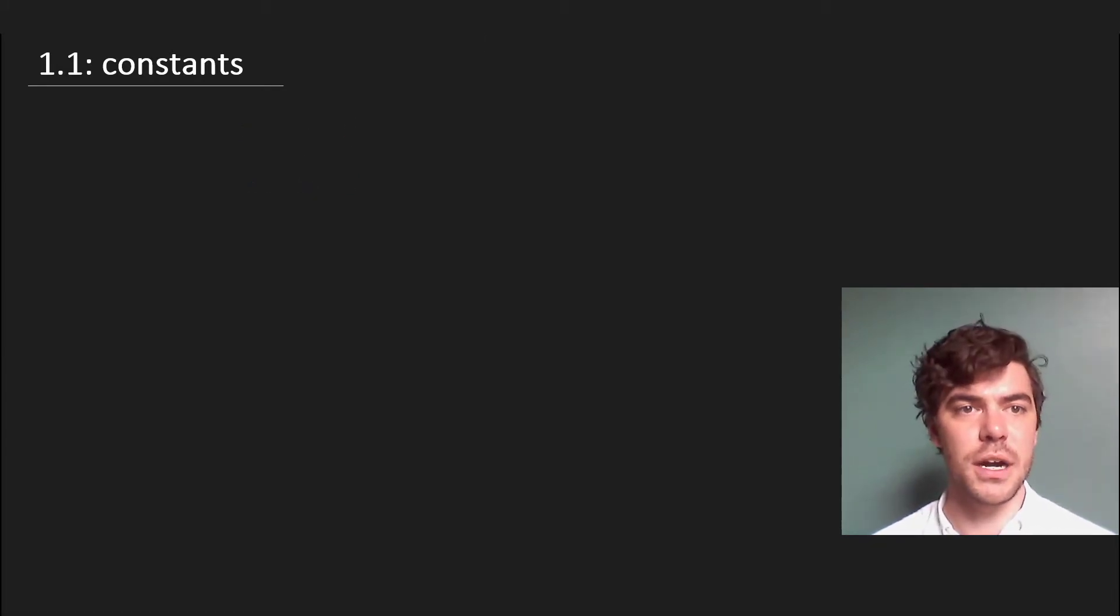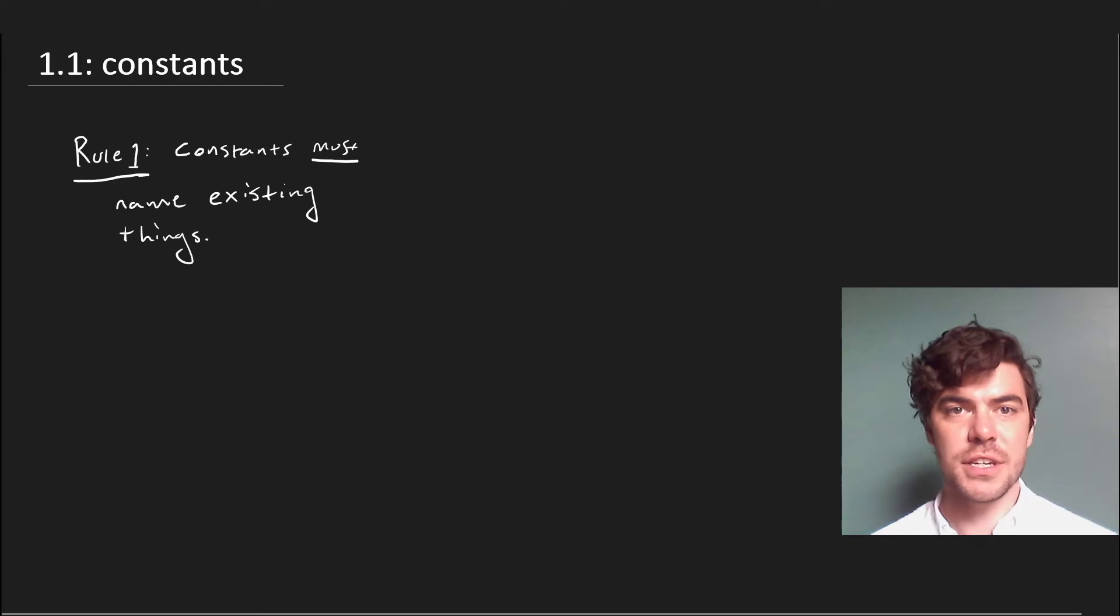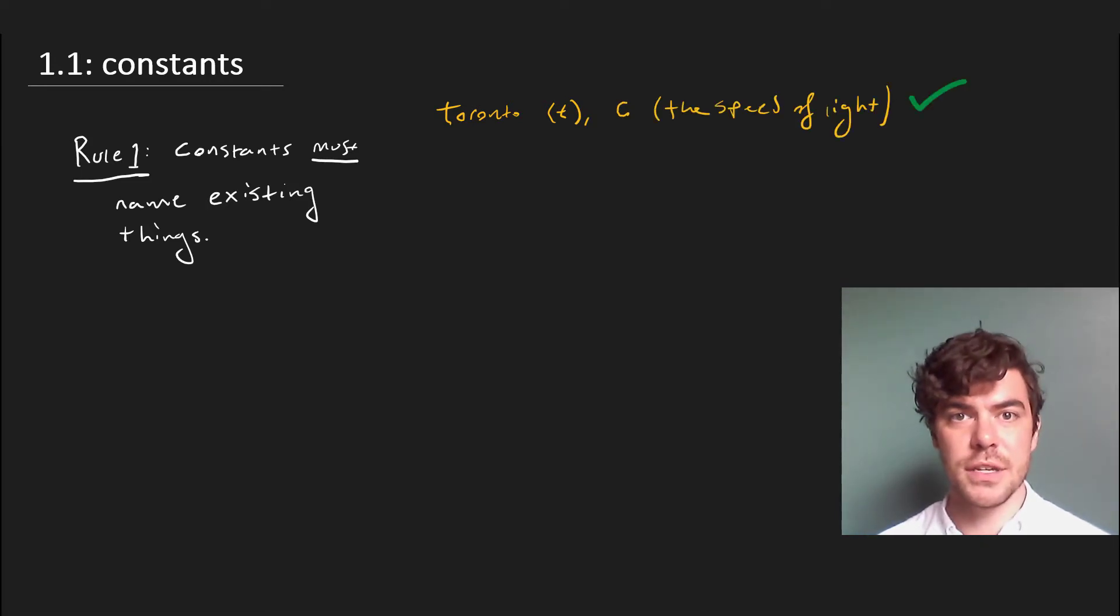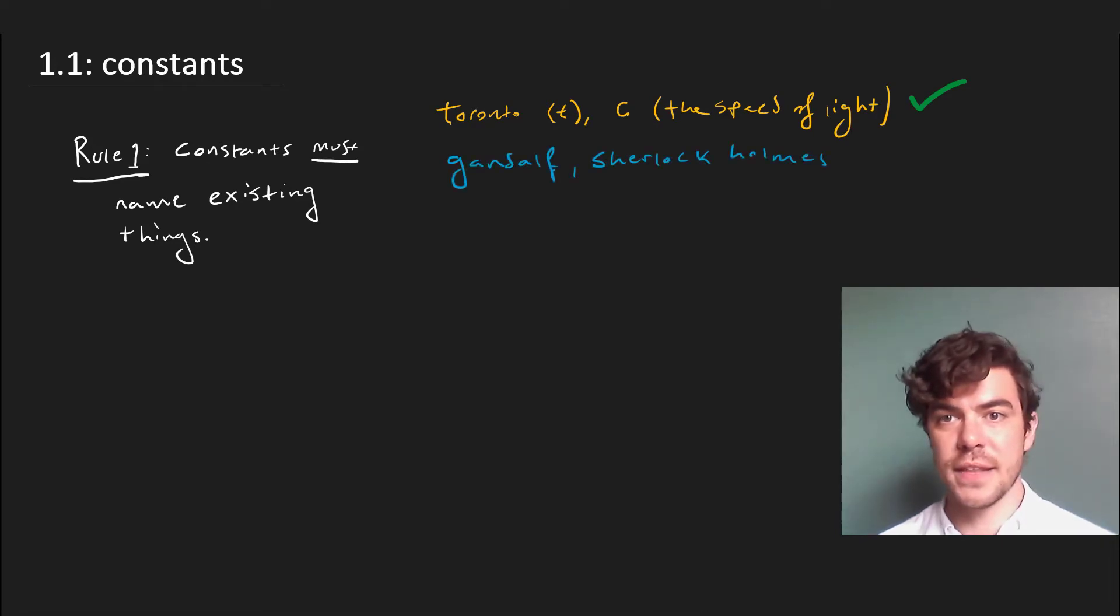Now there are three rules for constants that we're going to go over here. The first rule is that constants must name existing things. So it's perfectly fine to have a constant like Toronto, which we could write as T, or just to pluck an example from physics, a constant like C which names the speed of light, but it's not okay to have constants for things that don't exist like Gandalf, Sherlock Holmes, and that sort of thing.